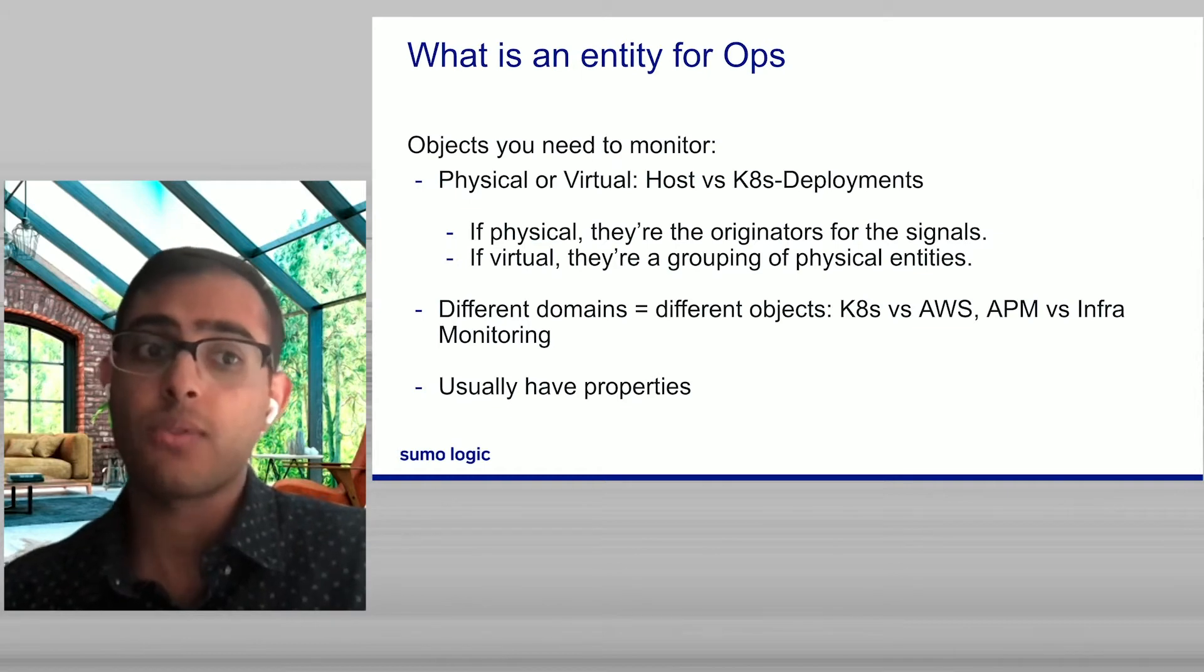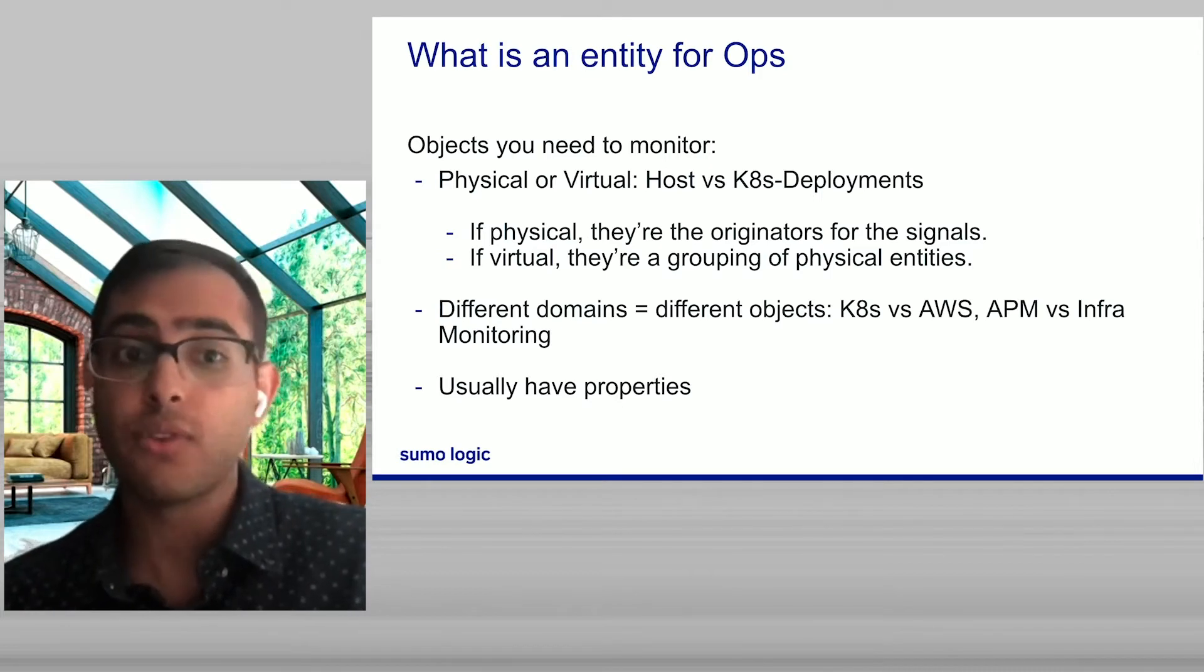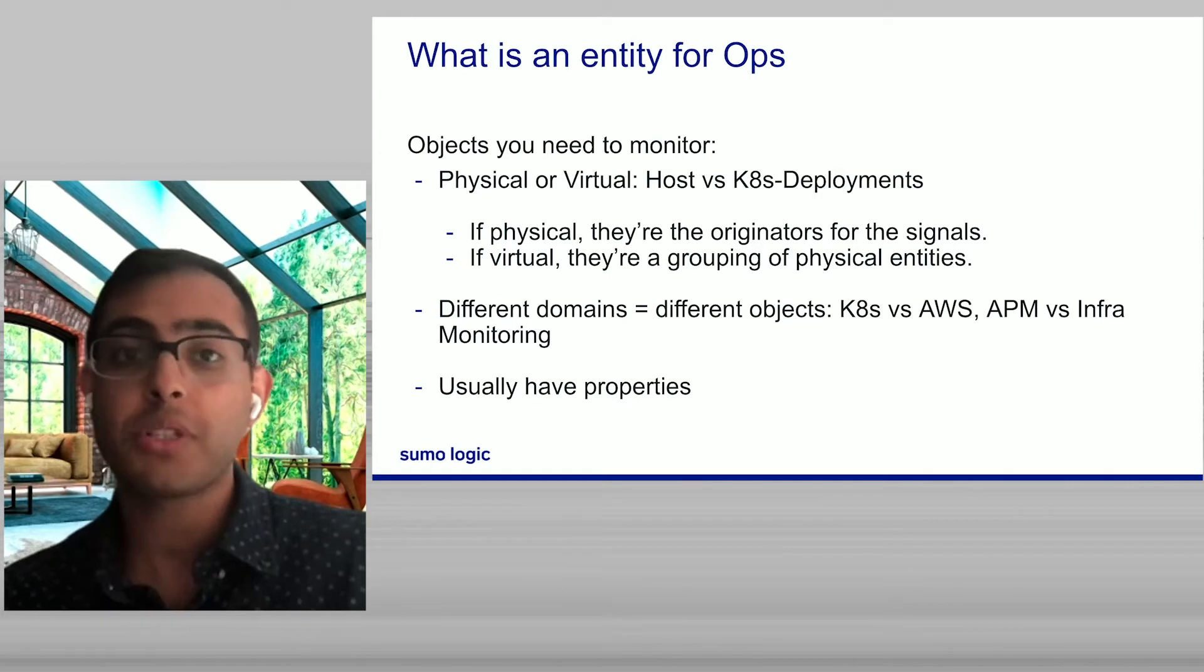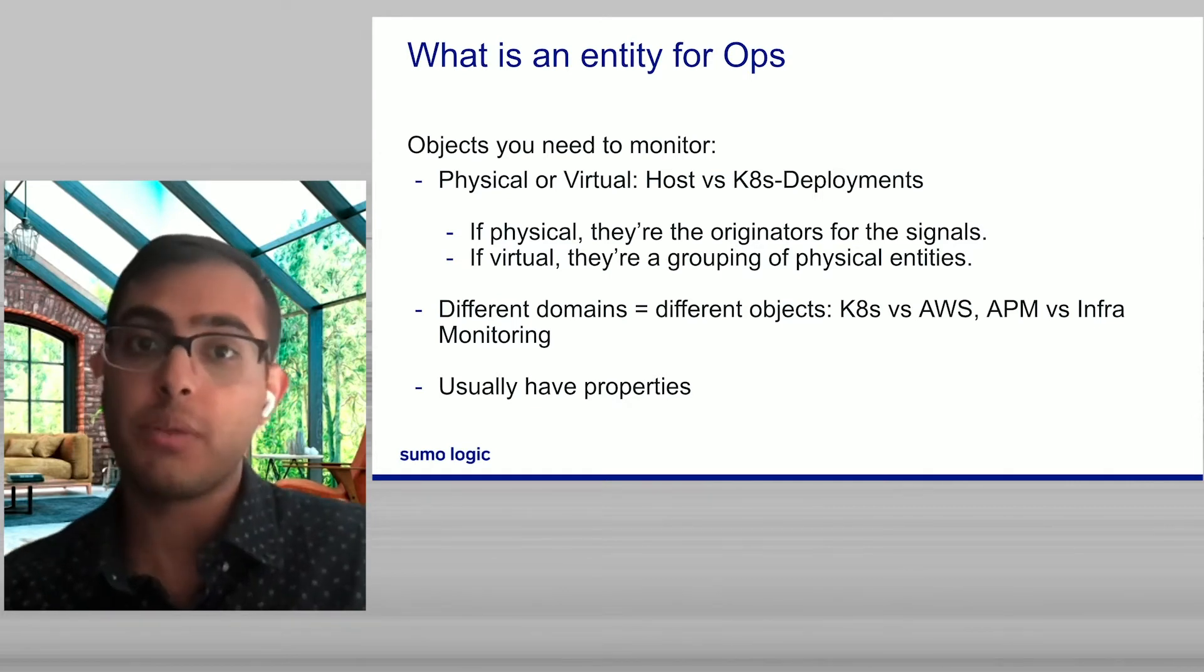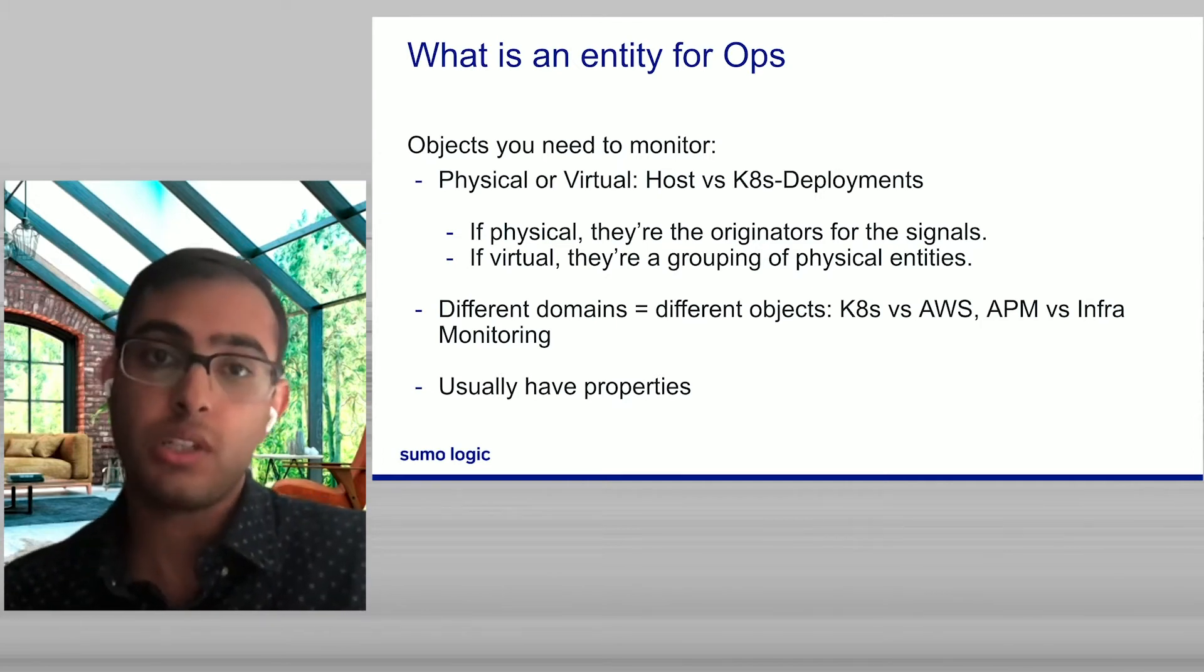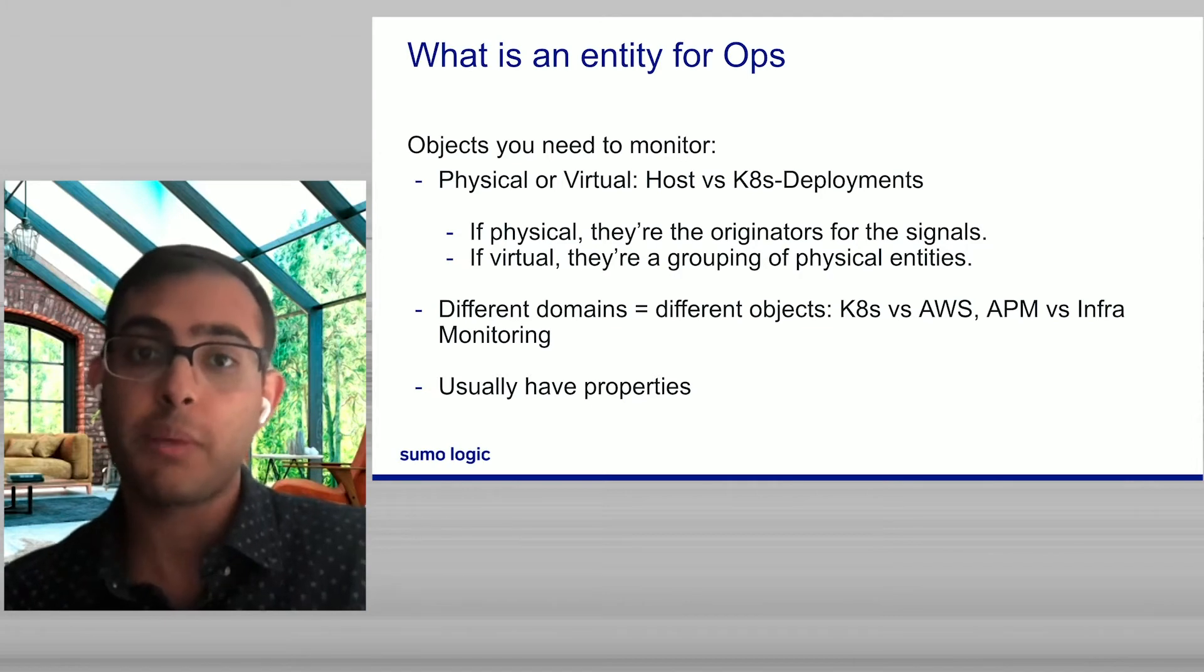As we abstract this out, we can see that there's a few key properties of what an entity is for ops. Firstly, you've got physical objects and virtual objects, things like hosts versus things like Kubernetes deployments. And if it's physical, then these are the originators of the signals that you're actually monitoring. If they're the CPU, they describe the CPU of the actual workload running. If they're virtual, then they actually represent an abstract grouping of the actual physical elements themselves. When we think about a CPU for deployment, it's really the aggregate or the average CPU of the underlying pods themselves.